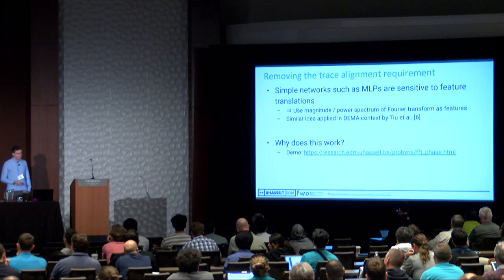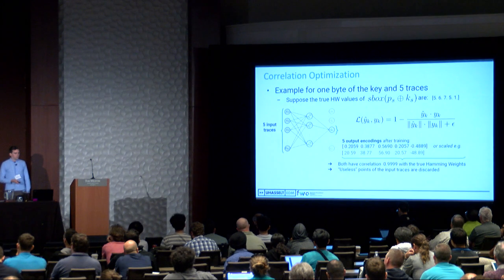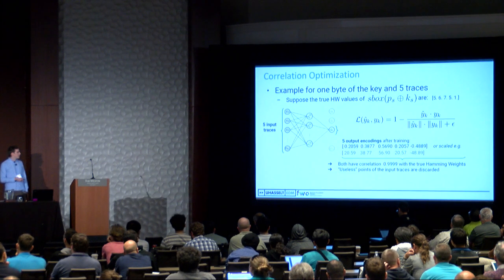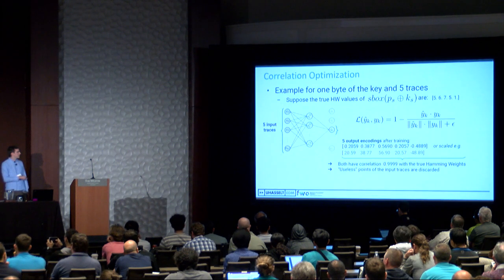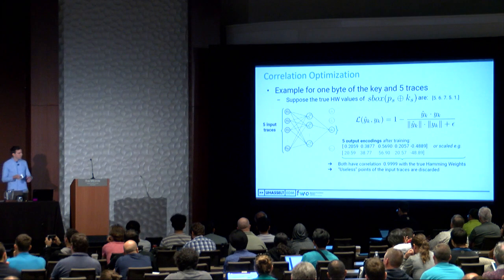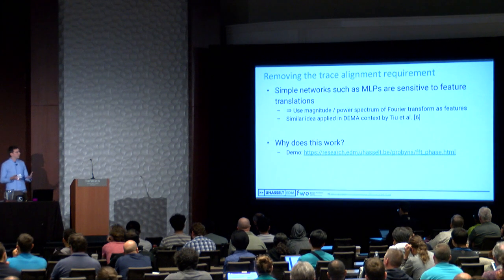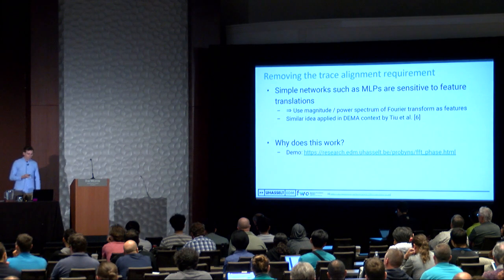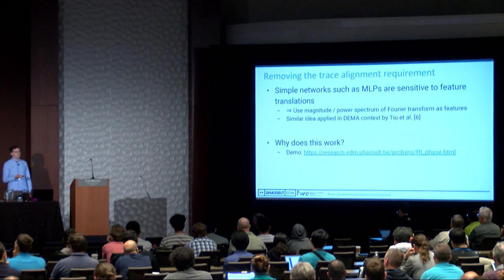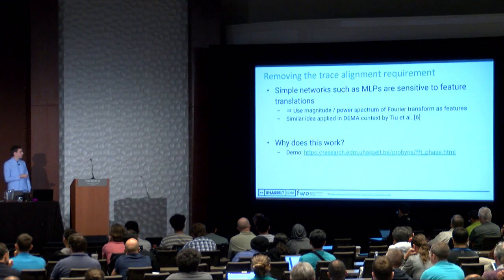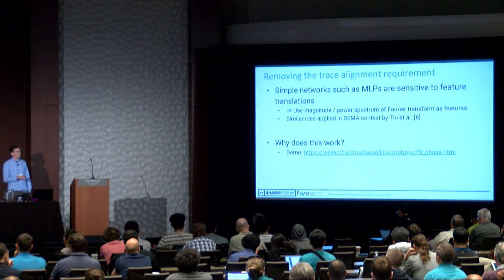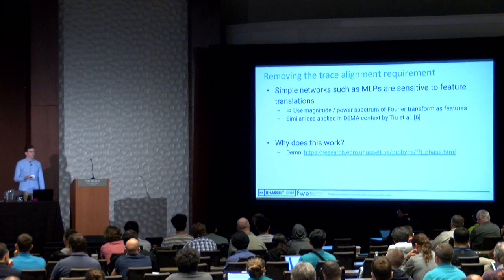About removing the trace alignment requirements: the problem with these simple networks is that if you translate a trace by one sample to the right—so X1 becomes X2 and so on—the learned weights will no longer correspond to the right features. That's why MLPs are very sensitive to feature translations. As a solution, we use the magnitude or power spectrum of the Fourier transform as features for the neural network. A similar idea was applied in a DPA context by Tu et al. in 2005, and we borrow from that idea and apply it in a machine learning context.